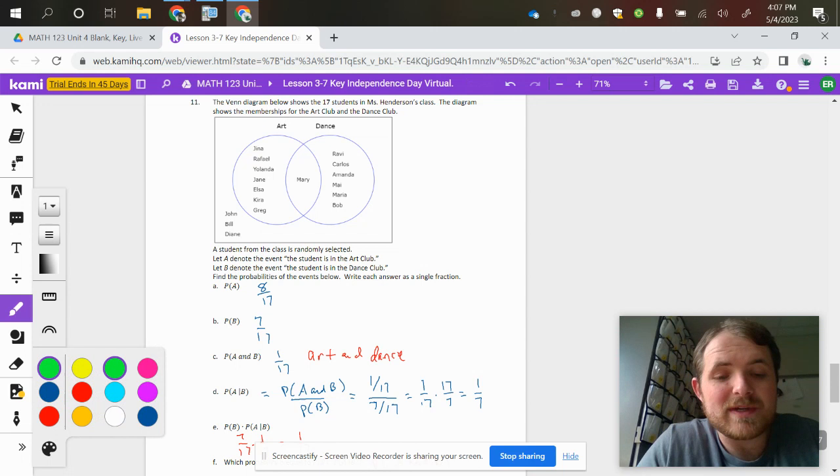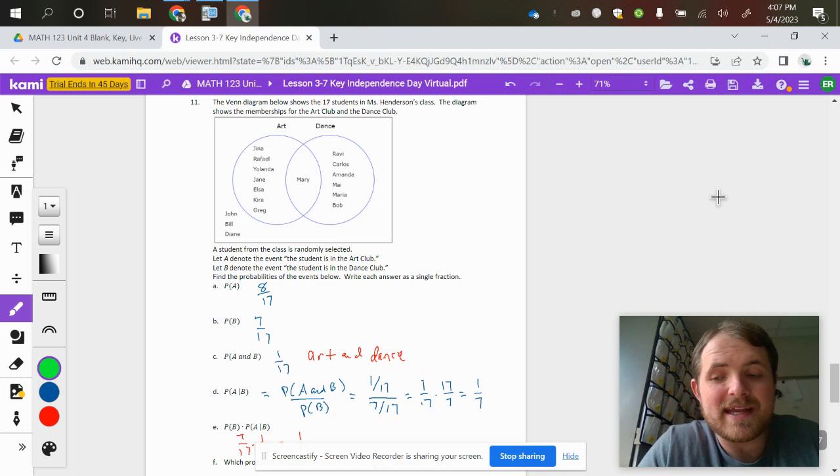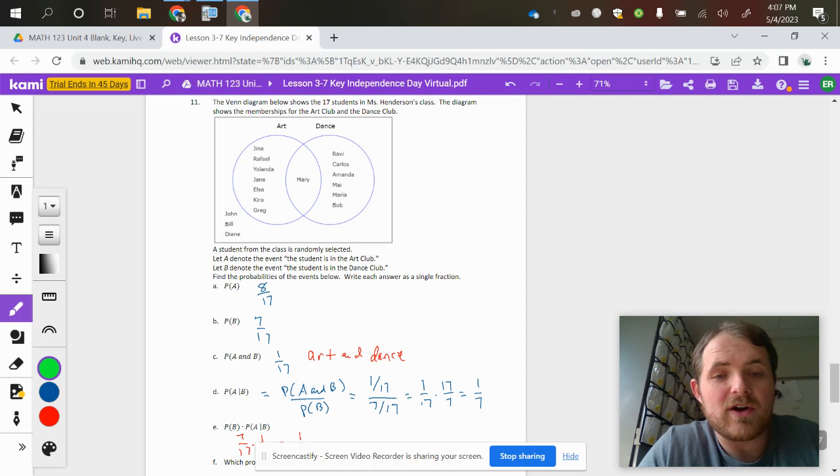Part D is probably the hardest one here because we have to remember a formula. It's the probability of A given that B. What's the probability that someone's in art given that they are also in dance? You would do the intersection, 1 over 17, divided by the probability that they are in dance, 7 out of 17.